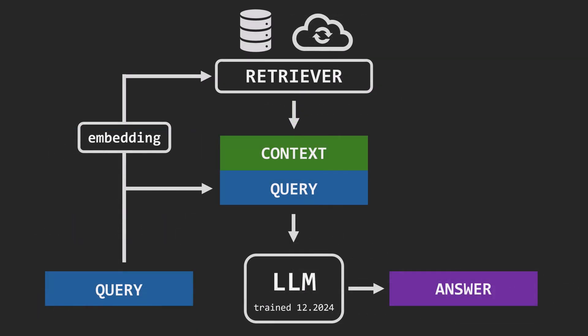RAG lets an LLM access external sources like documents or the internet. Another benefit of RAG is how easily we can manage data. Unlike retraining an LLM, which is costly and complex, we can update the external database any time — add manuals, remove outdated news, or even switch to a new domain-specific dataset. This makes RAG far more flexible.